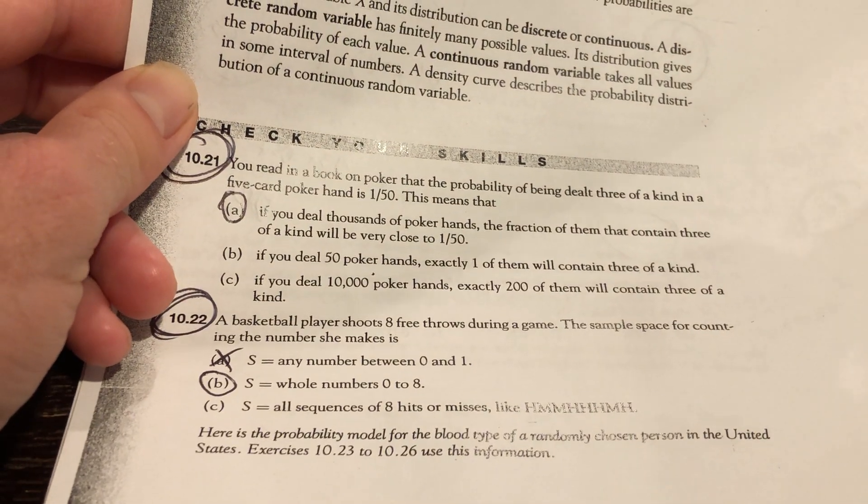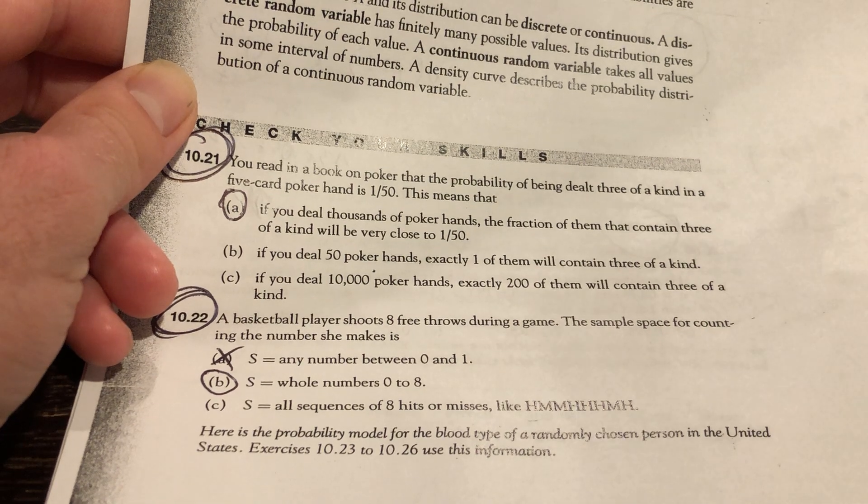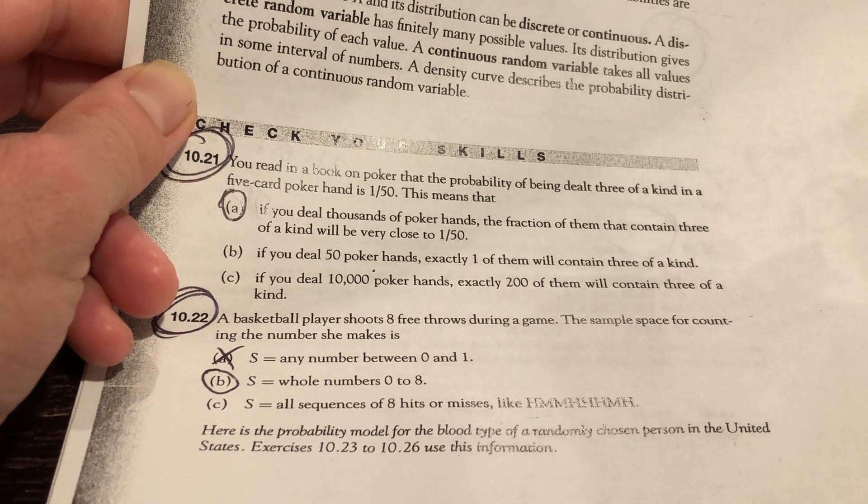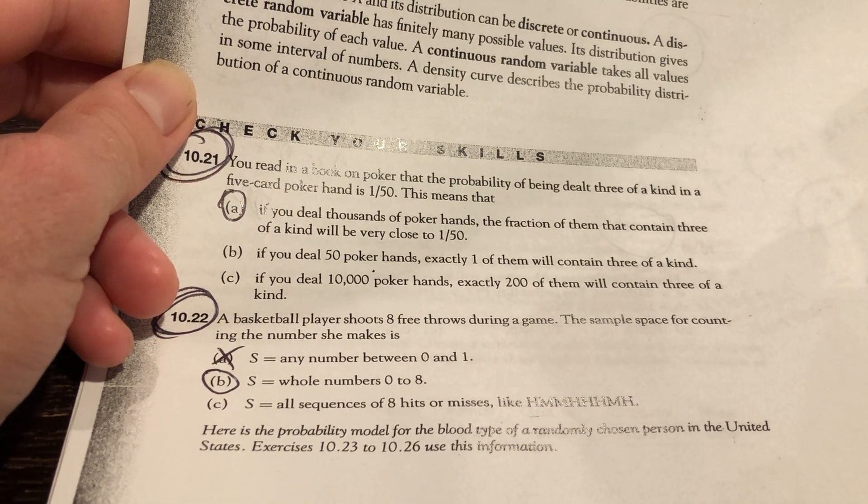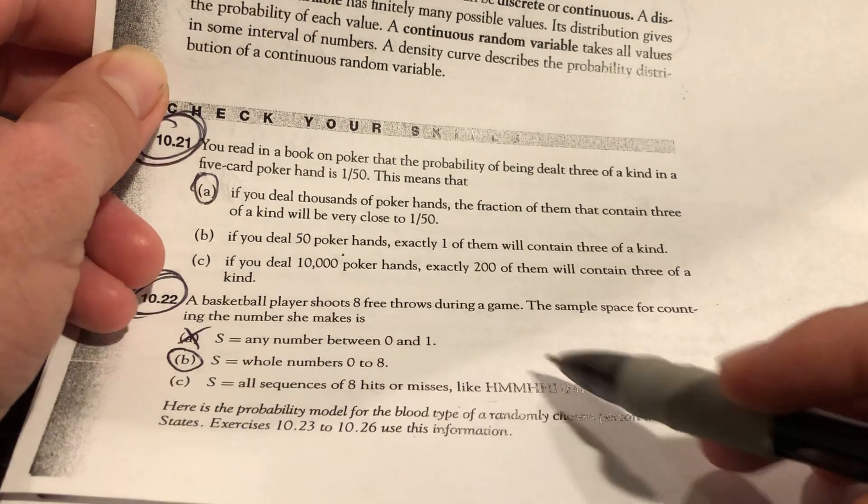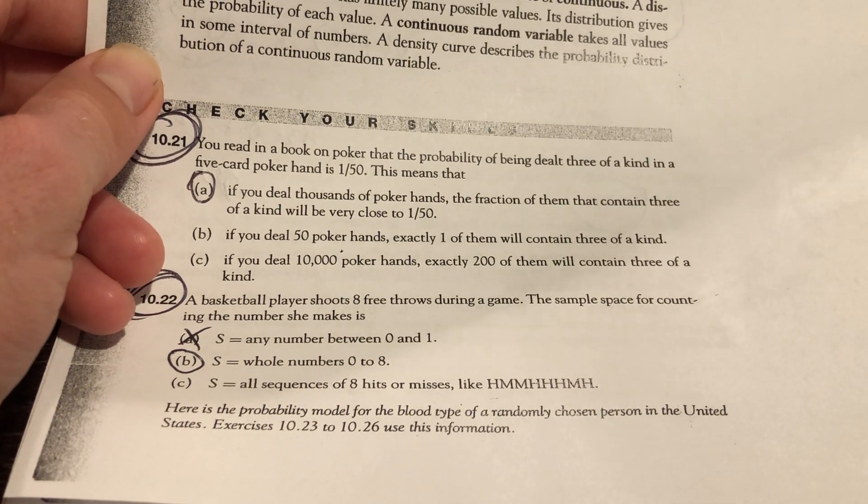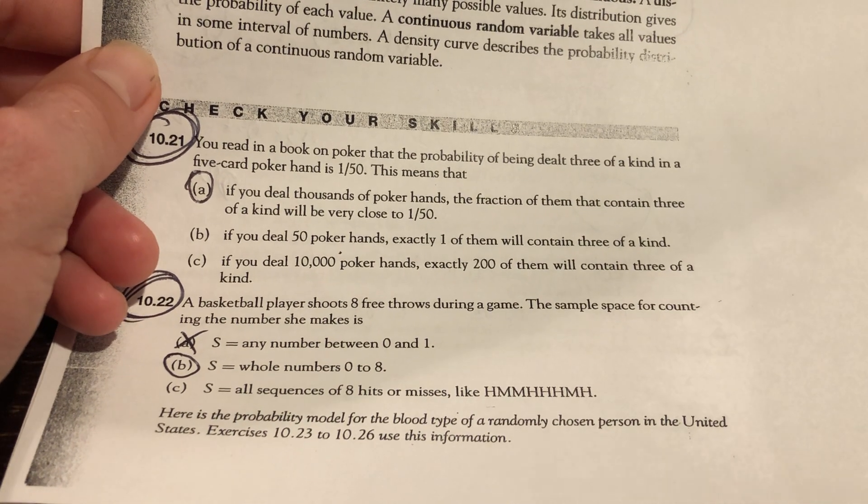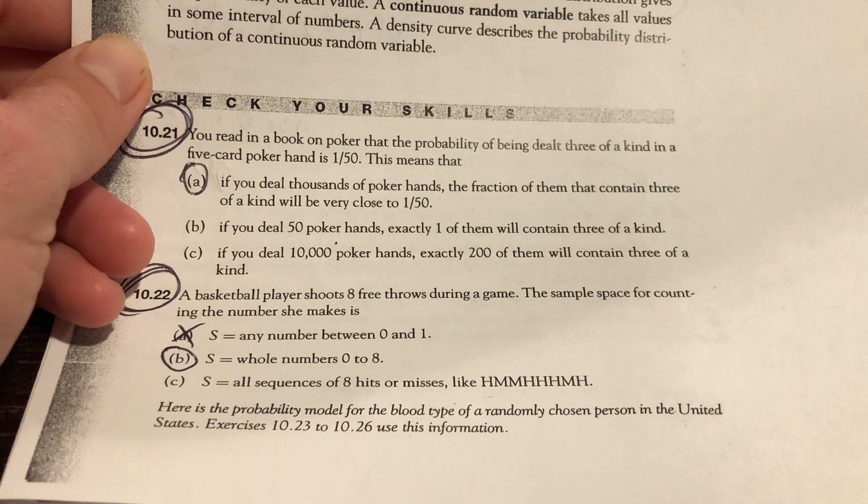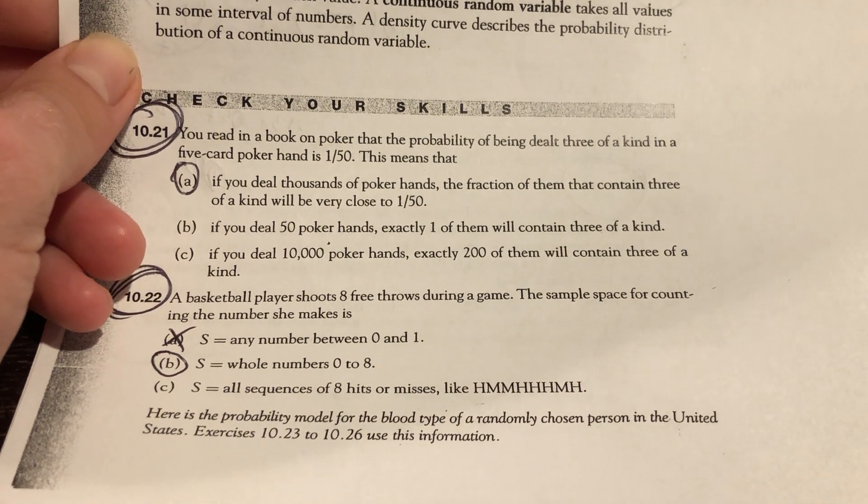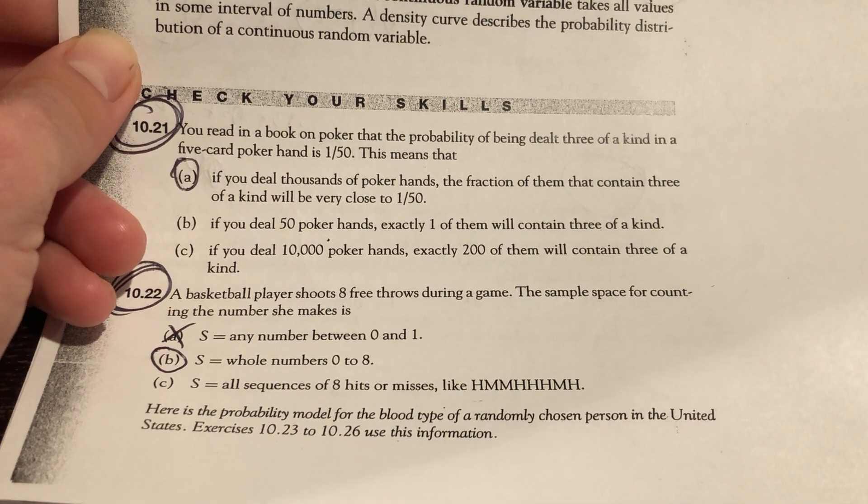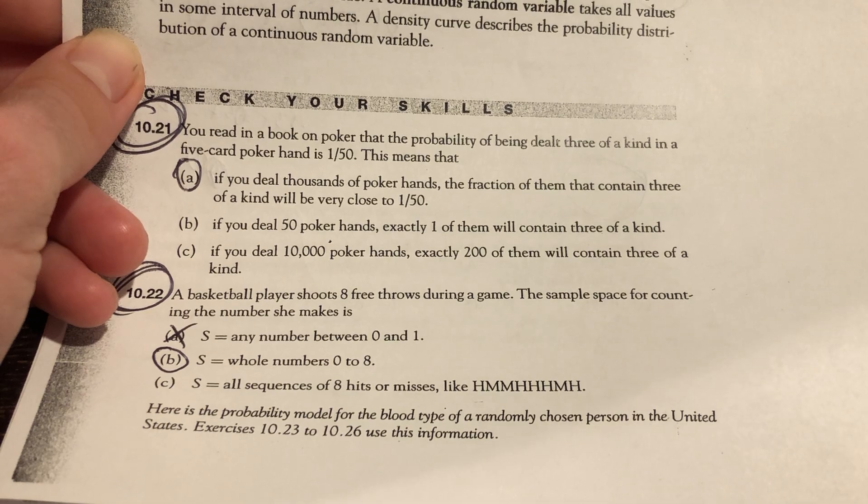Basketball player shoots eight free throws. Sample space for counting the number of makes that she has. The number is zero to eight. This is the entire sample space of what could happen, which would be two to the eighth, 256 different outcomes for shooting eight baskets, believe it or not. That sample space is huge.